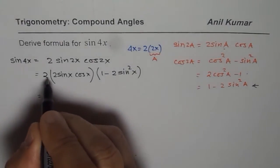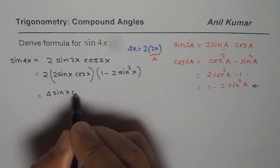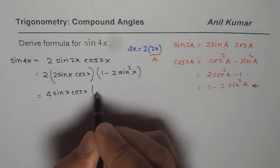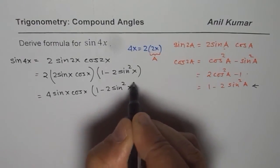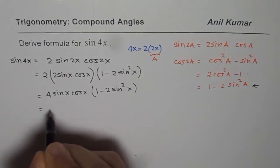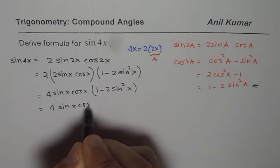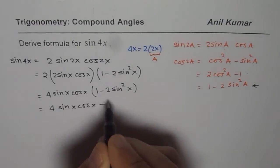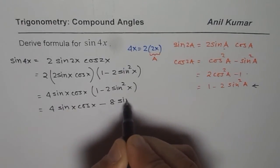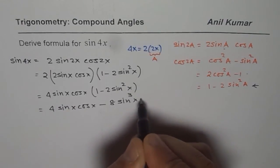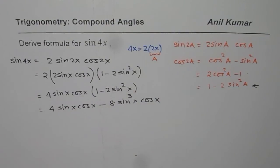Now we can expand it. We get 4 sin x cos x times 1 minus 2 sin²x. When you expand it, you get 4 sin x cos x minus 8 sin³x cos x, since 4 times 2 is 8, and sin x times sin²x is sin³x.